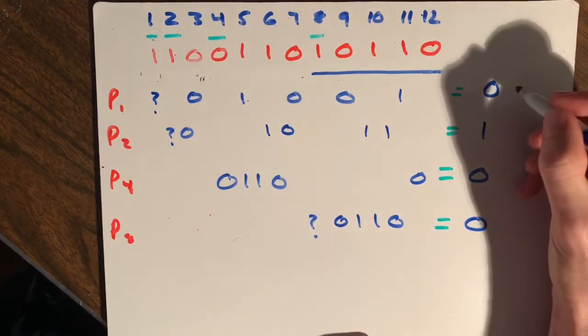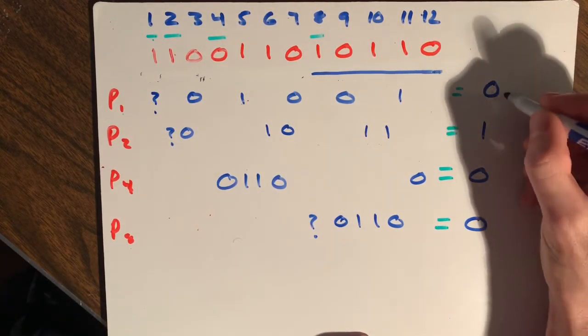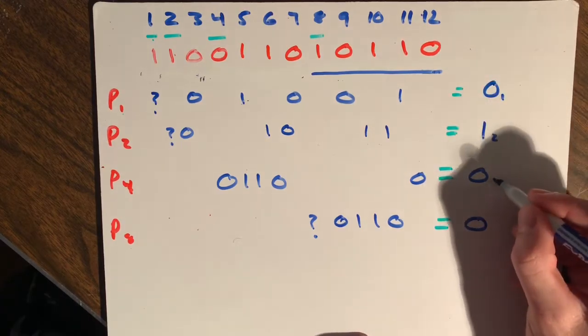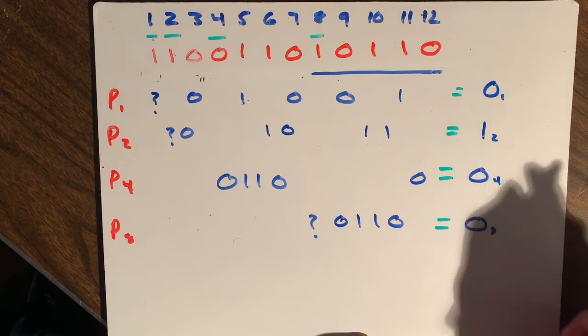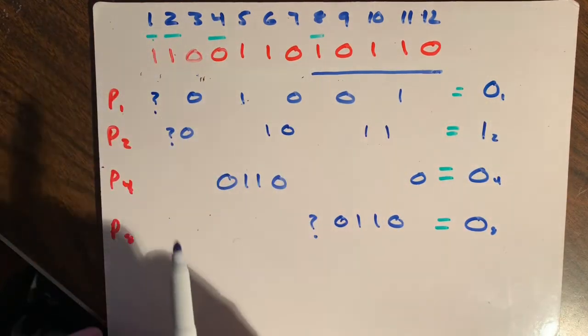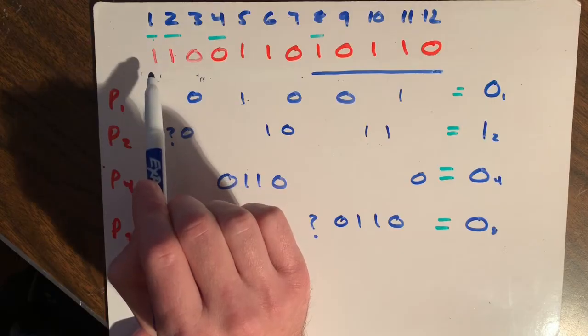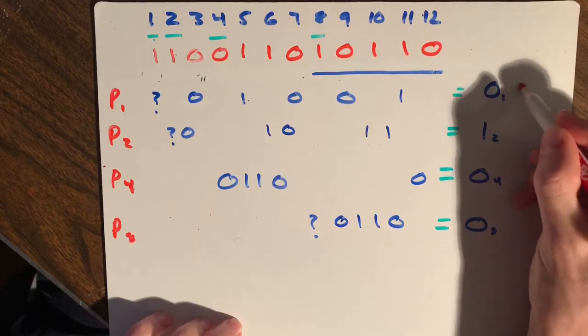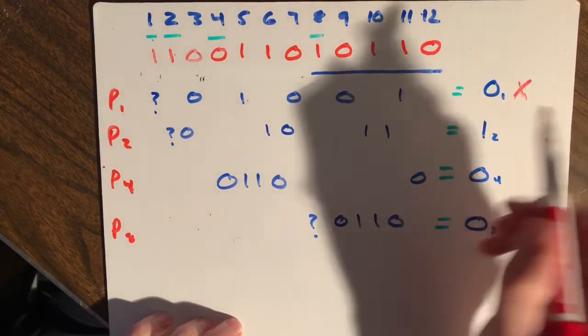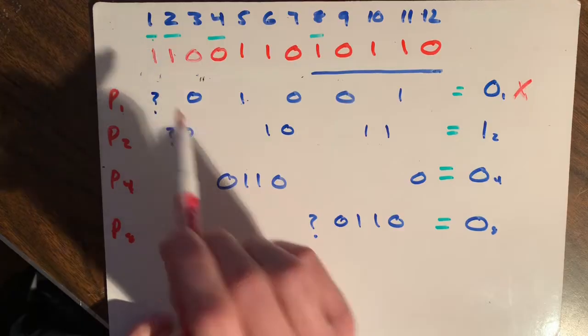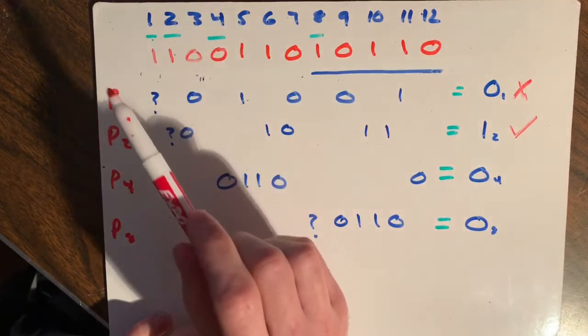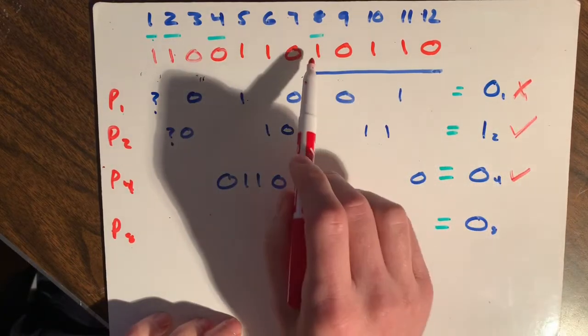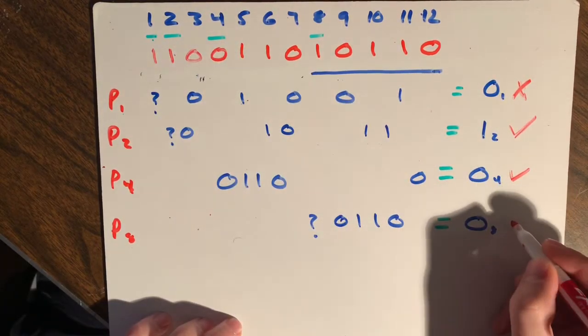Now what we want to do is look at each parity bit. So remember, this is one, that's two, that's four, and that's bit eight. And we want to see if the corresponding parity bits match that. So for bit one, they have a one, we have a zero, so we're going to mark that as wrong. And for two, they have a one, we have a one, we can give that a check mark. For four, they have a zero, we have a zero, we'll give that a check mark. For eight, they have a one, and we have a zero, so we'll mark that wrong.